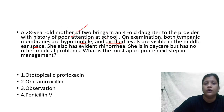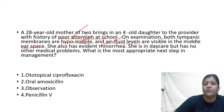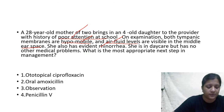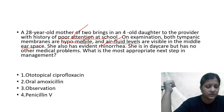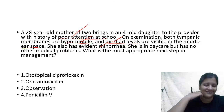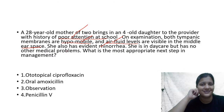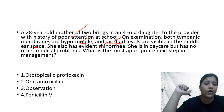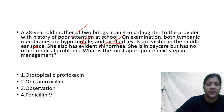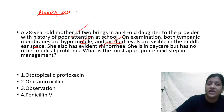The child is having poor attention at school. On examination the tympanic membrane is hypomobile, there is an air-fluid level, and there is rhinorrhea but no other medical problems. What is the most appropriate next step? Do you want to give oral antibiotic, topical antibiotic, or observation? Please give your answer in the chat box.